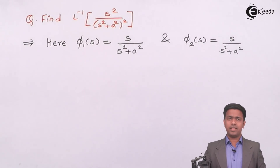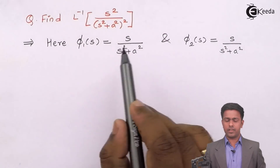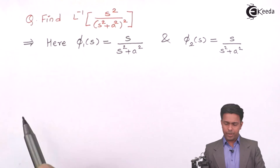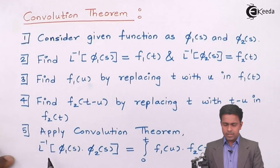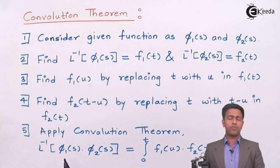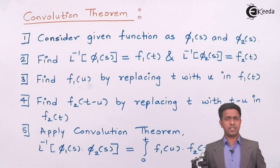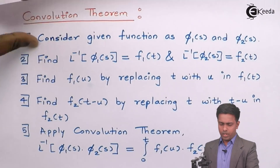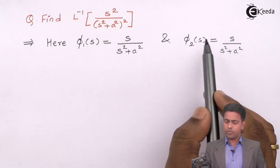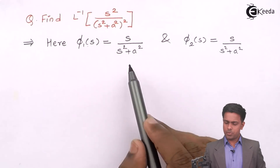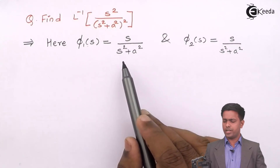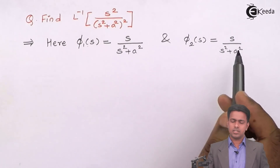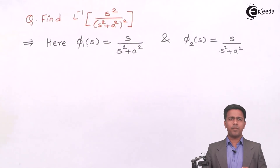So here φ₁(s) is equal to s upon (s squared plus a squared) and φ₂(s) is s upon (s squared plus a squared). Whenever we multiply these two functions, φ₁(s) and φ₂(s), we should get the original question again. If I multiply these two functions, I get s × s = s squared, and (s squared plus a squared) × (s squared plus a squared) = (s squared plus a squared) the whole square. So the multiplication of these two functions gives me back the original question — so I am correct.